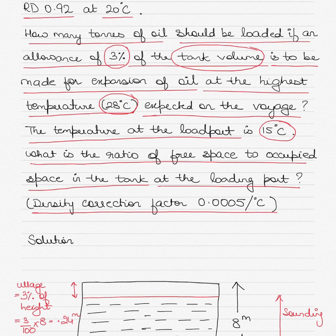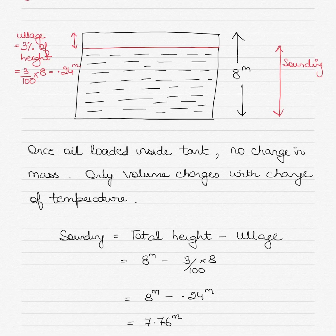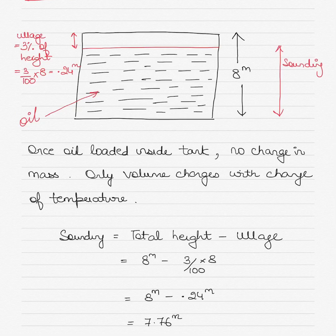Now let's visualize what is happening at this port. I have drawn the tank here with dimensions 9 meter by 8 meter by 8 meter. The importance here is given to the height, because it is the height that gets affected when we leave 3% of the tank for expansion. You cannot control loading by limiting the length or breadth of the tank — you can only control the height. The ullage is the height of the free space.